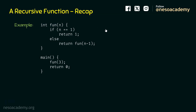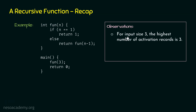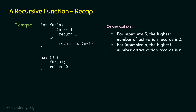We observed a couple of things in the last lecture. The first observation was: for input size 3, the highest number of activation records is 3. We can see the input size is 3 — we call function 'fun' passing 3, received by variable n. When this function is called with input size 3, the highest number of activation records at some point in time is 3. If the input size is 10, the highest number of activation records will be 10. If the input size is 100, it will be 100. So for input size n, the highest number of activation records is n.